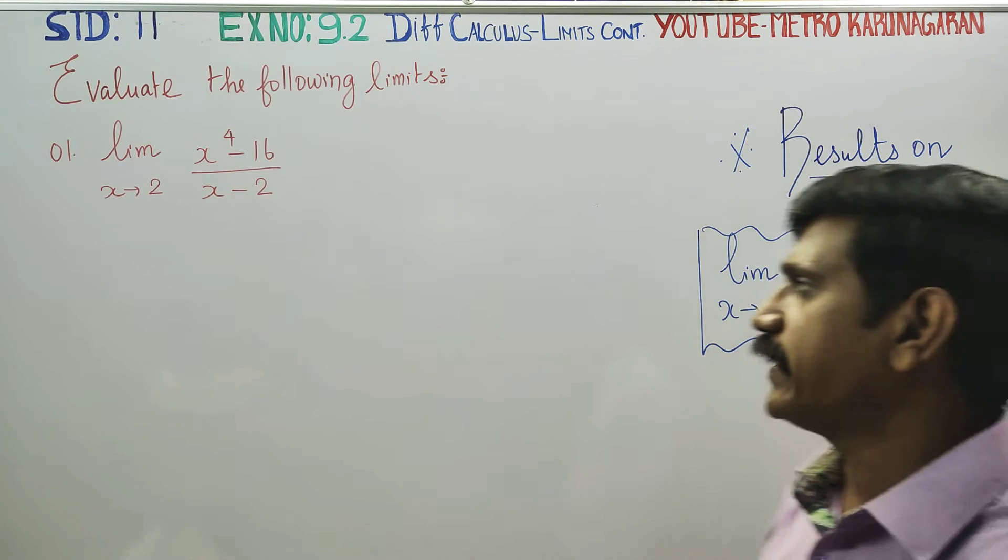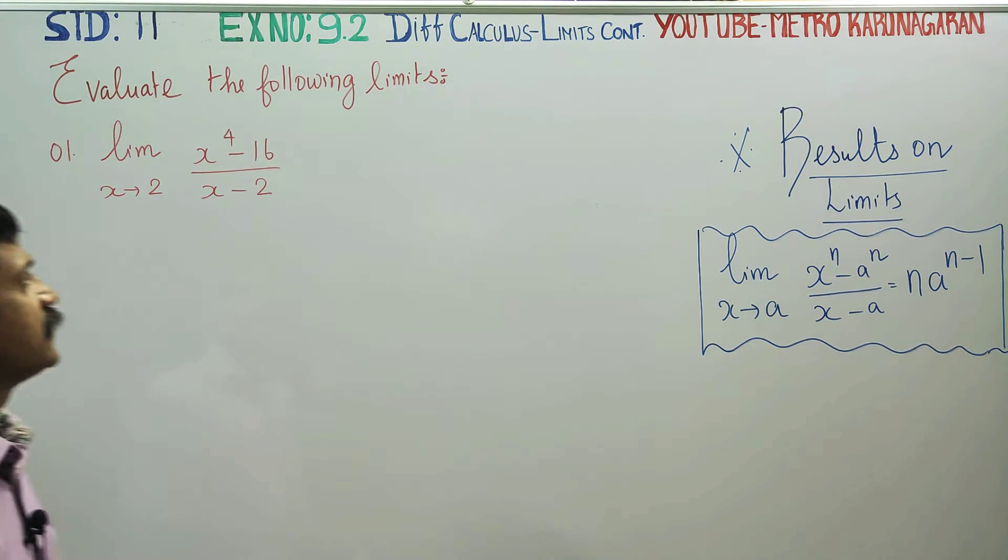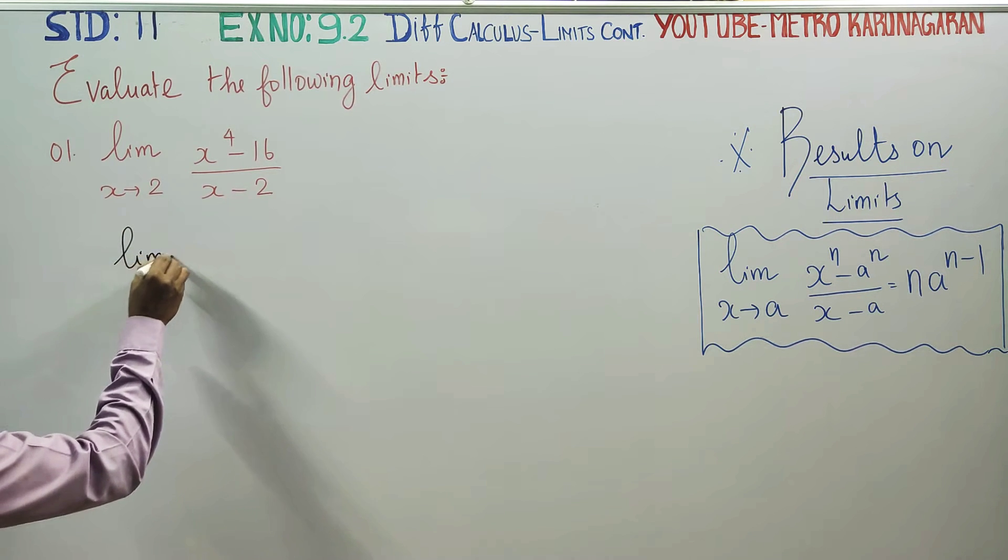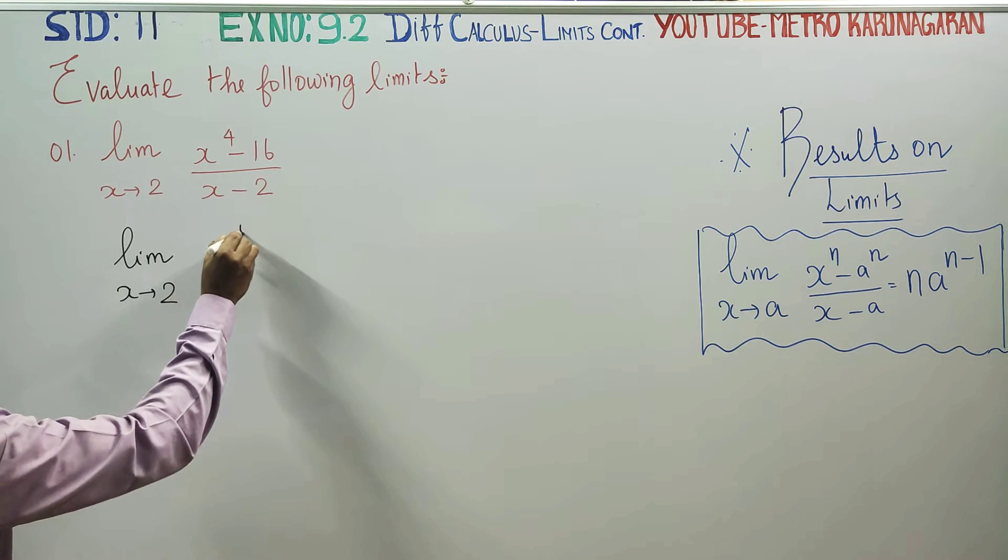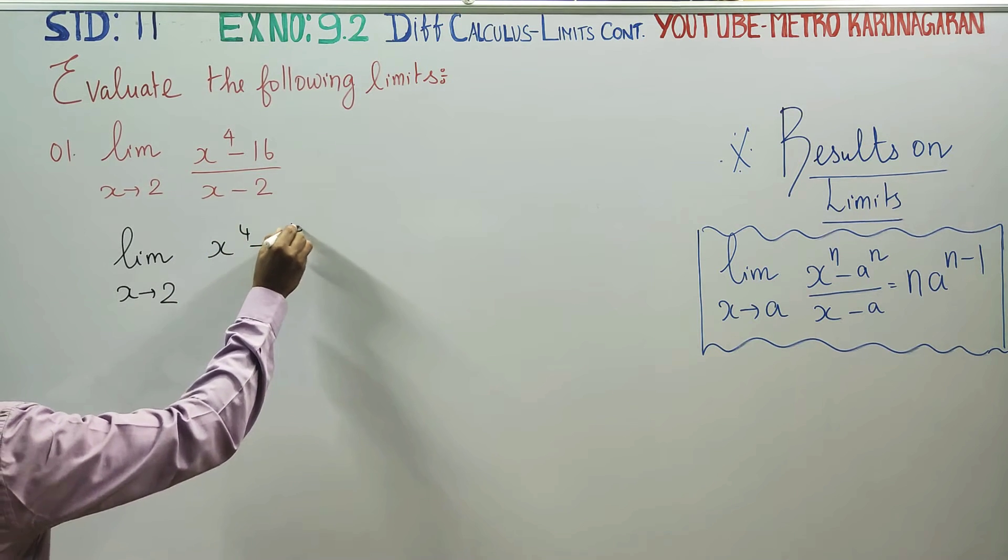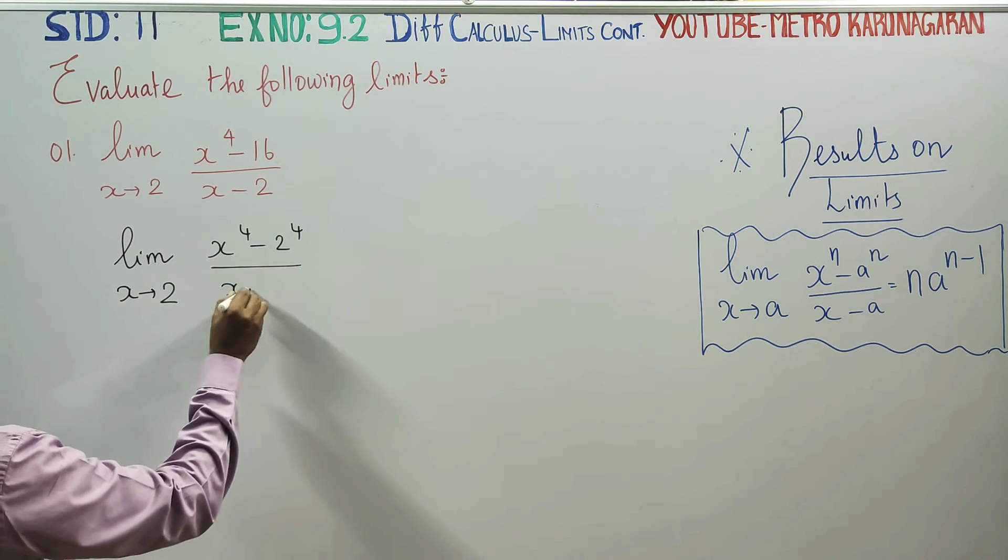Limit x tends to 2, x to the power 4 minus 16 by x minus 2. This can be written as limit x tends to 2, x to the power 4 minus 2 to the power 4 by x minus 2.